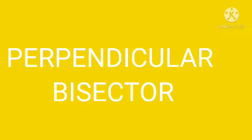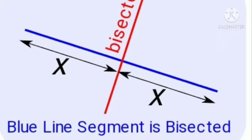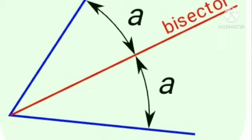First of all we have to learn what is a bisector. A bisector is something that cuts an object into two equal parts. This applies to angles and line segments. In verb form we say that it bisects the other object. Here we discuss the case of bisector to a line segment, and later we will discuss bisector to angles.